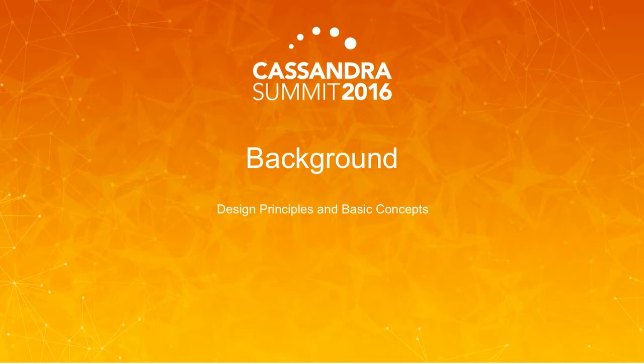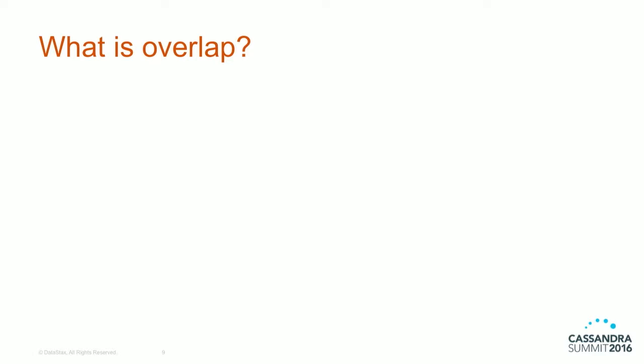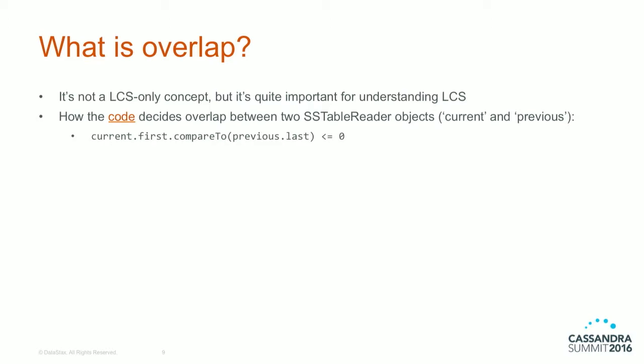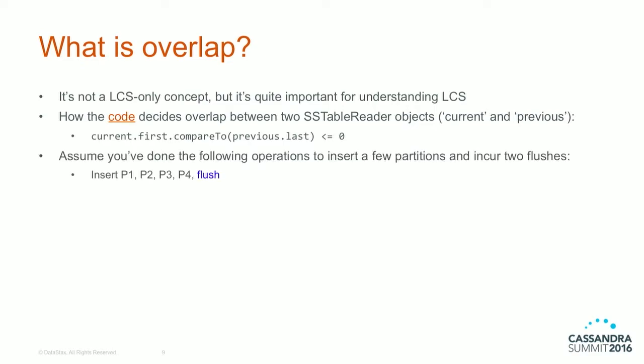I'm going to talk about some of the design principles of Level Compaction Strategy, but first we want to look at a key concept called overlap. Overlap is an LCS-only concept but quite important if you really try to understand some of the source code and JIRA discussions. Here's a small code piece from the implementation: we have two SSTables we're comparing to see if they're overlapping, called current and previous. The code is simply: current.first <= previous.last.